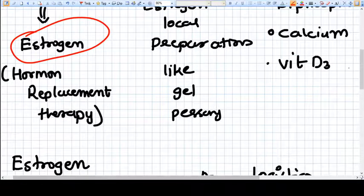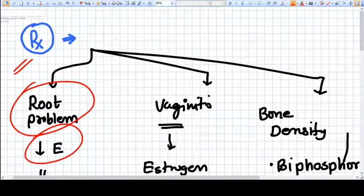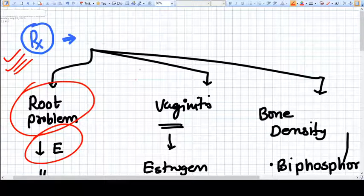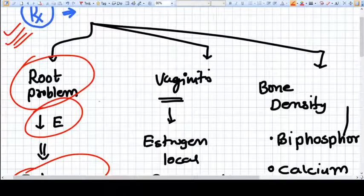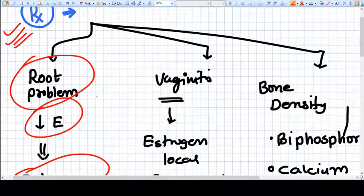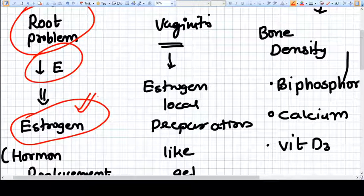Hey everyone, in this video, the last video in the series on menopause, we'll discuss the basic concepts of treatment. The root problem in menopause is decreased level of estrogen, and that's why we provide external estrogen. External estrogen is available readily as tablets, local preparations, gels, suppositories, or even parenteral.